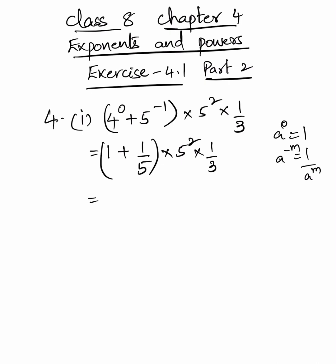That is equal to 6 by 5, into 5 square, into 1 by 3. 3 twos are 6, 5 fives are 25. So the answer is 10.